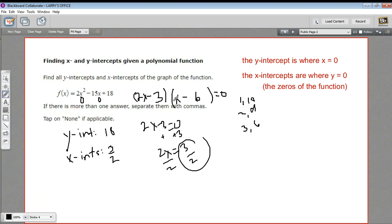And the other one is x minus 6 equals 0. I'm just going to do that in my head. We get a positive 6 for the other x-intercept. So that is how to find the y and the x-intercepts of a polynomial function.